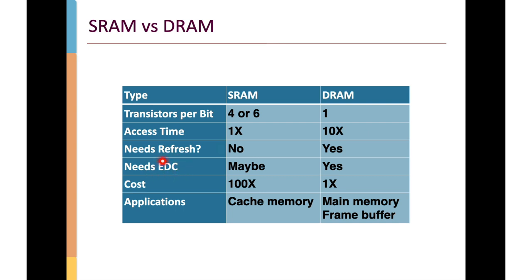EDC stands for Error Detection and Correction. Because DRAM stores things in a capacitor, there's a propensity for that circuitry to lose its storage. We often want to detect the possibility that one bit has gone wrong within a particular byte or word, using additional bits to track and even correct errors. SRAM is much less subject to losing its value and may or may not require error detection and correction circuits. In terms of cost, if a single bit of DRAM costs one unit, a bit of SRAM costs around 100 times as much — two orders of magnitude more expensive, though also quite a lot faster.